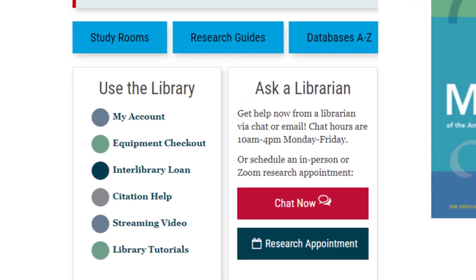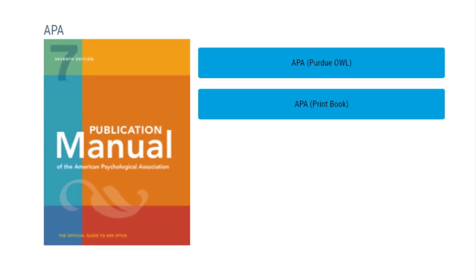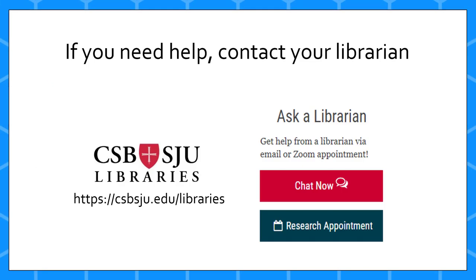You can find more information about how to generate an APA citation on the library website. Click on the citation help link where you'll find links to the official APA manual, a physical book found in both libraries, as well as the Purdue OWL Guide to APA Citations, which is an authoritative online citation guide. If you still have questions, reach out to a librarian, the Writing Center, or your professor.